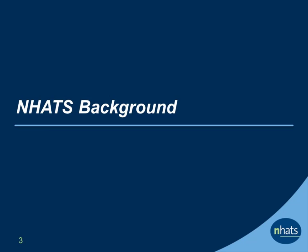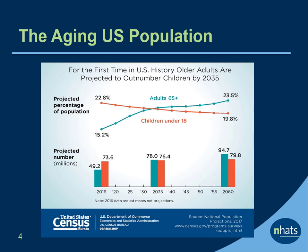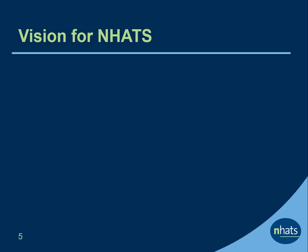Let's start with some background about NHATS. The population worldwide is aging. The U.S. Census Bureau projects that older adults will outnumber children by 2035. The risks of disability increase substantially with age. In the U.S., the large baby boom cohorts born between 1946 and 1964 are now beginning to reach ages when risks of disability are substantial. To foster research that will guide efforts to reduce disability and enhance quality of life at older ages, the National Institute on Aging initiated NHATS in 2008.